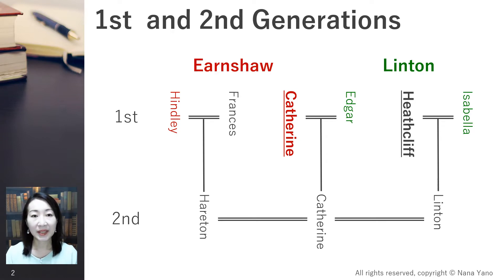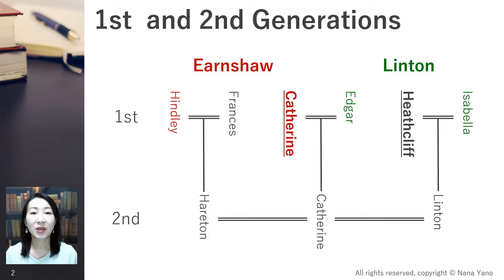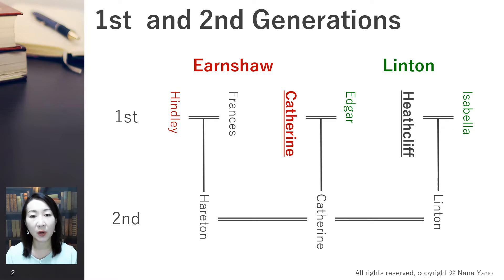As you can see in this family tree, the story of the first generation covers Henry and Catherine of the Earnshaw family, Edgar and Isabella of the Linton family, and halfway through the novel comes the death of Catherine. The second half is centered on their children.